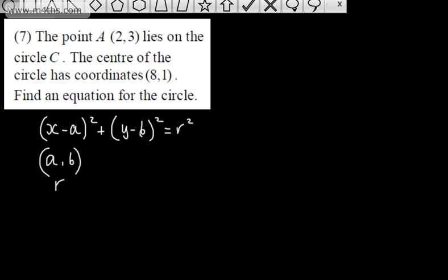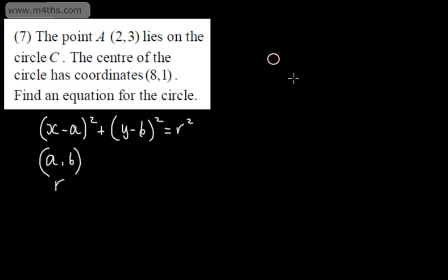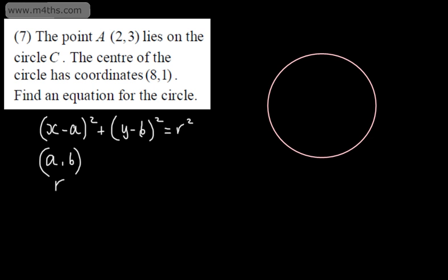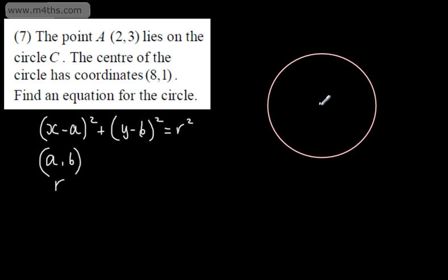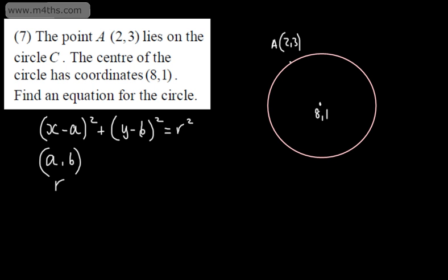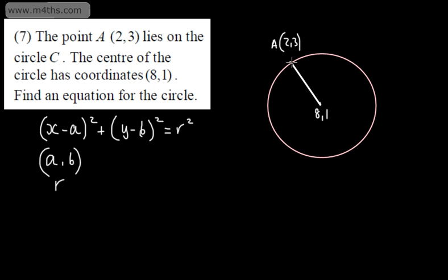With this one, you don't have to sketch it, but it might help. I'm going to draw this up. We're going to have the center at 8 comma 1, and then I'm going to have some point just here, and that is going to be the point A. When I draw a sketch, it doesn't have to be massively accurate — it just gives me some idea of what's going on. So that would be the radius, and we can start writing out the equation of this circle.